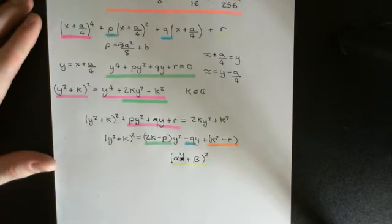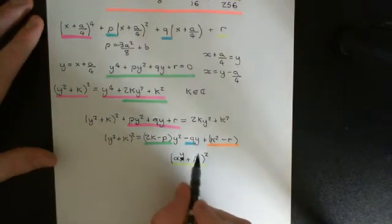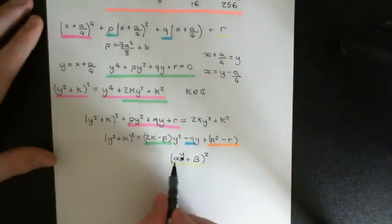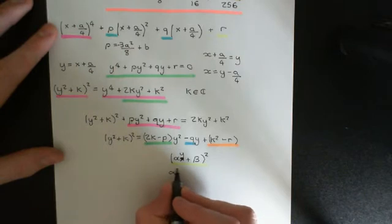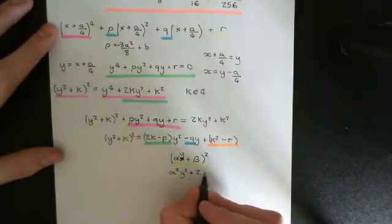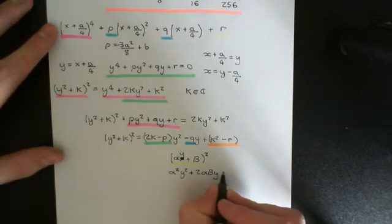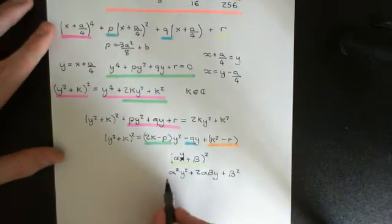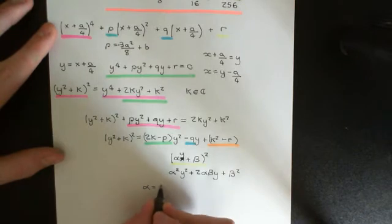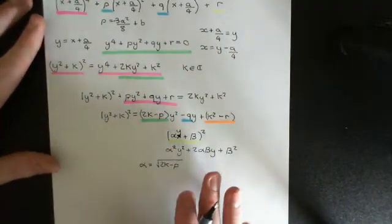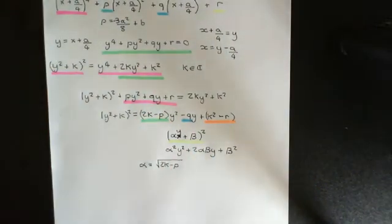So this is a brilliant, brilliant strategy. The question is: can it be done? And if it can be done, what are alpha and beta going to have to be? Let's just expand out what alpha y plus beta squared gives us. It's going to give us alpha squared y squared, then plus two alpha beta y, and then plus beta squared. That means that alpha squared is going to have to equal 2k minus p, so alpha is going to have to equal the square root of 2k minus p — let's say the principal square root of 2k minus p.